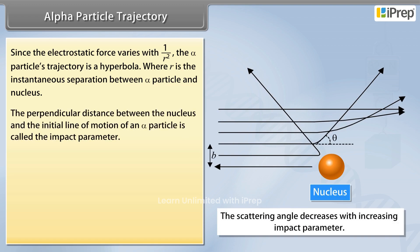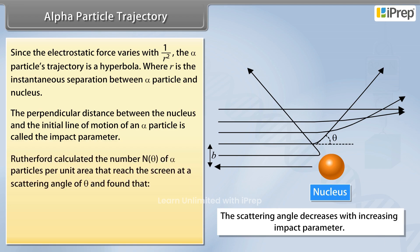Rutherford calculated the number N(θ) of alpha particles per unit area that reached the screen at a scattering angle of θ and found that N(θ) is inversely proportional to sin⁴(θ/2).